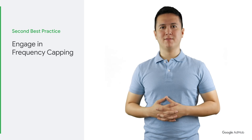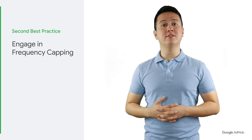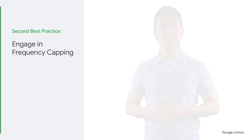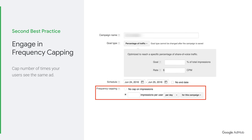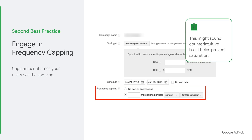Second best practice: engage frequency capping. It is good practice to cap the number of times your users see the same ad. This might sound counterintuitive, but it helps prevent saturation, keeping your users engaged with the ads on your apps.